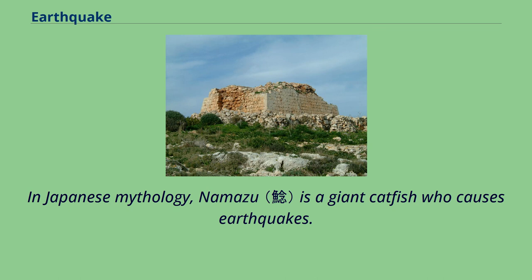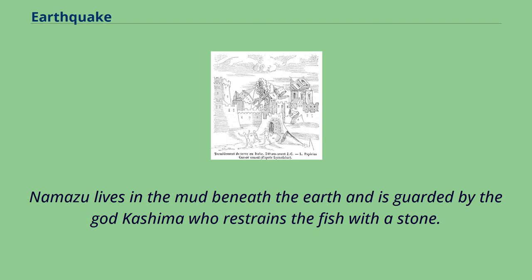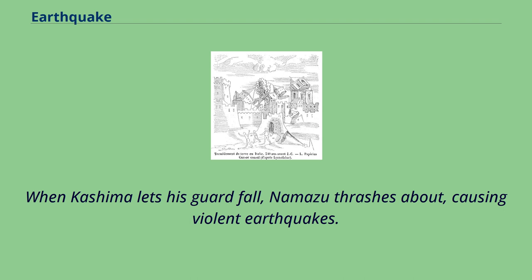In Japanese mythology, Namazu is a giant catfish who causes earthquakes. Namazu lives in the mud beneath the earth and is guarded by the god Kashima, who restrains the fish with a stone. When Kashima lets his guard fall, Namazu thrashes about, causing violent earthquakes.